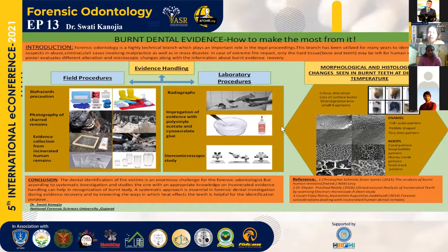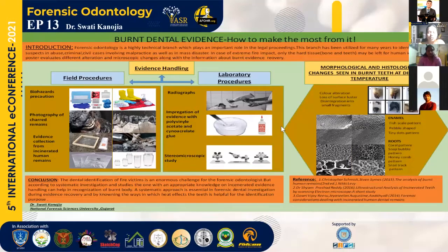Moving to the morphological and histological changes observed under the stereo microscope: mature enamel will not change its color initially, but teeth exposed to lower temperatures or shorter durations show a dark black or browning color. As temperature and duration increase, tooth color changes to blue and gray, then becomes stark chalky white at high temperatures. This condition is known as calcination.